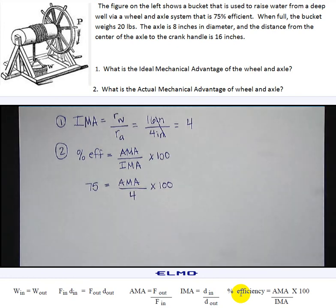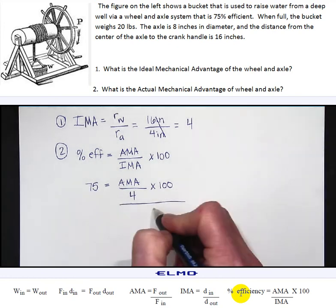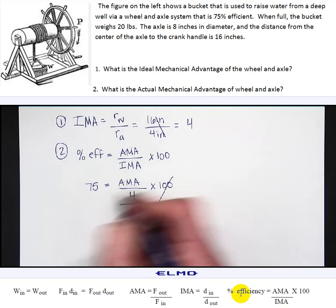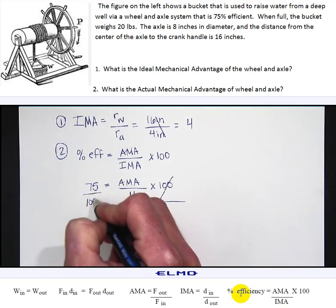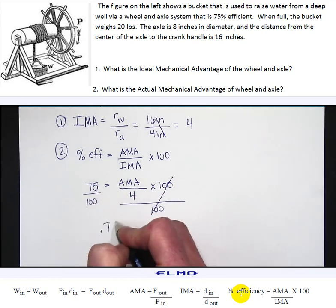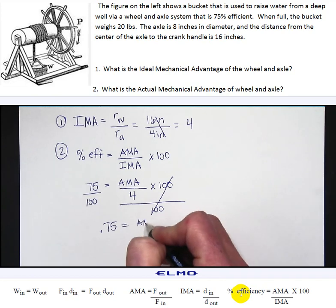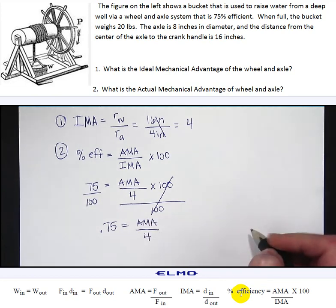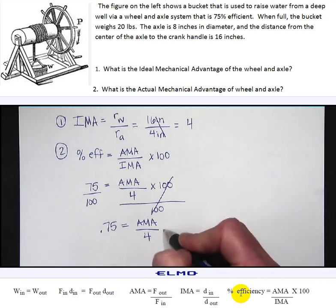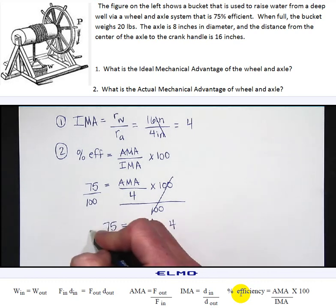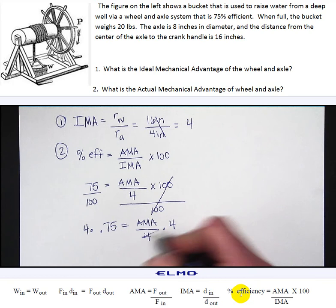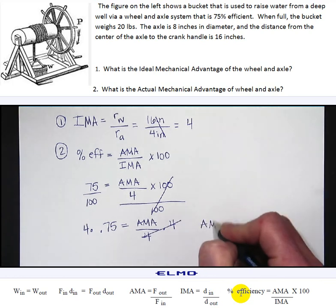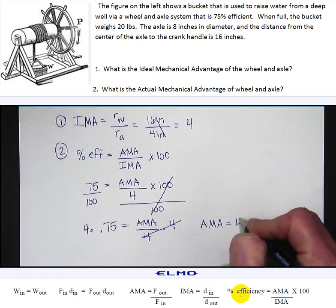In order to undo multiplying by 100 we need to divide by 100 on both sides. And then in order to solve for AMA I need to undo dividing by 4 so now I'm going to multiply by 4 on both sides. And my actual mechanical advantage is going to be, not 4, 4 times 0.75 which is 3.